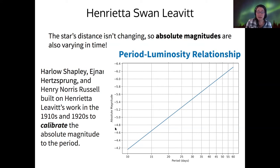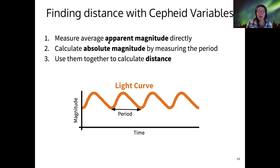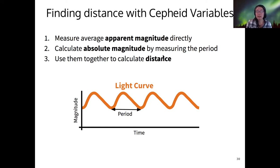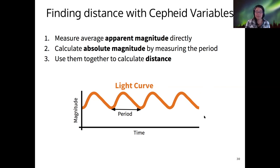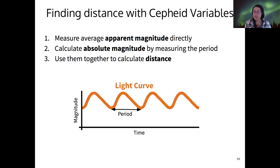The reason you want to do this is because if you can use the period of a Cepheid star to find its absolute magnitude, and then measure the apparent magnitude directly, you can use those together to calculate distance. The brightness of an object is proportional to its luminosity divided by its distance squared — similarly, apparent magnitude is related to absolute magnitude and distance. This is wrapped into a fairly simple equation you're going to use in the lab today to calculate the distance to four different Cepheid stars.